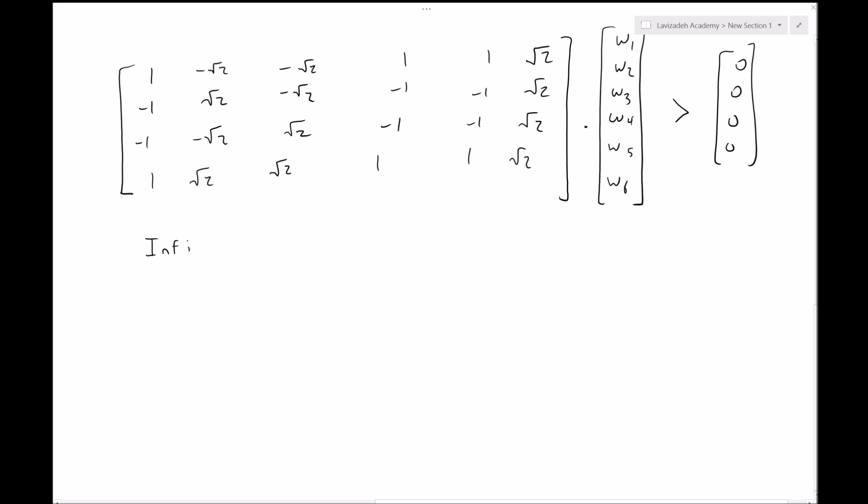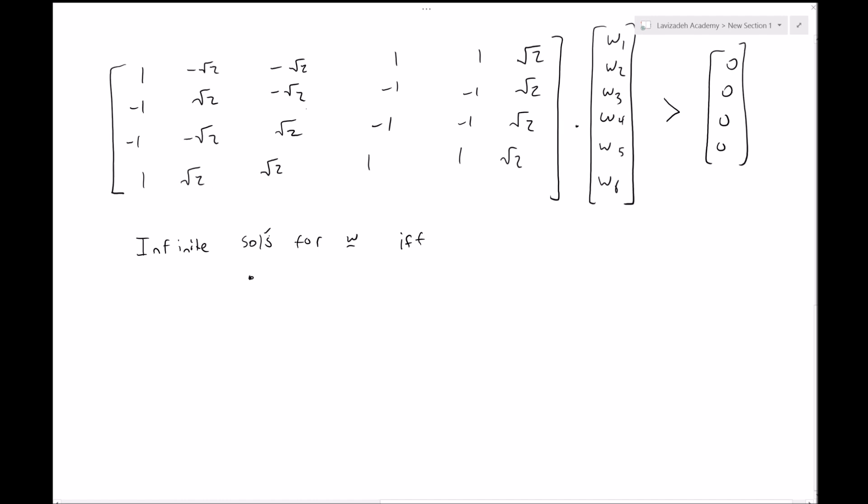This system of equations has infinite solutions for w if and only if these properties hold. Let's call this matrix A. Only if A is fat, and in linear algebra, fat means more unknowns than equations. And if the rank of A is equal to the rank of A augmented with our zero vector, where this is the zero vector, and that also must be less than n, the length of w. So these are three conditions really. These properties are for a system of equalities, but I've given you a system of inequalities.